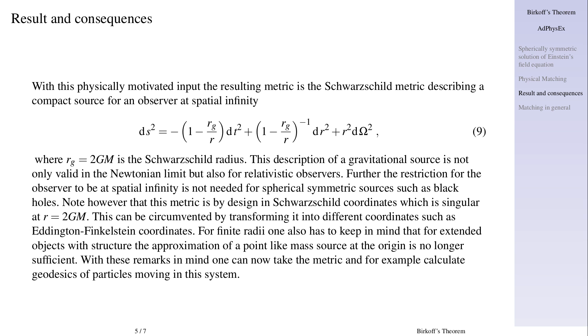This can be circumvented by transforming it into different coordinates such as Eddington-Finkelstein coordinates. For finite radii one also has to keep in mind that for extended objects with structure the approximation of a point like mass source at the origin is no longer sufficient. With these remarks in mind one can now take the metric and for example calculate geodesics of particles moving in this system.